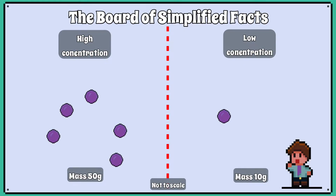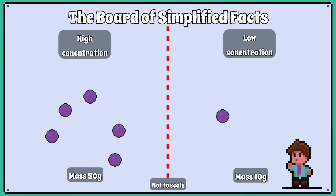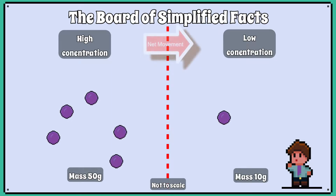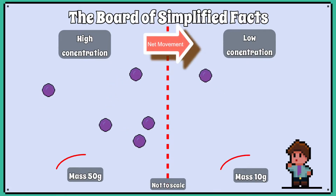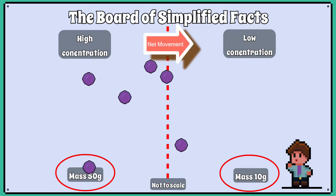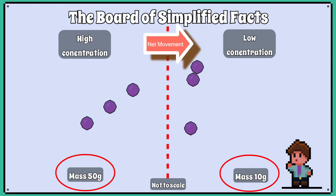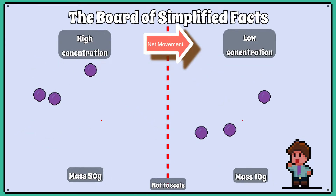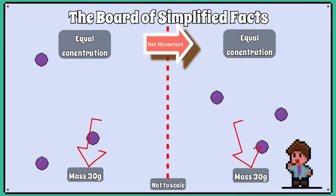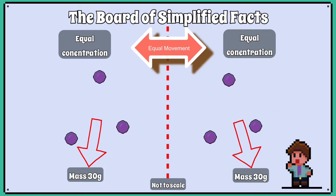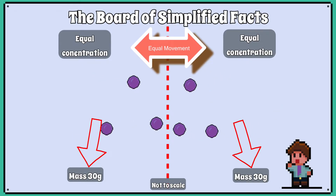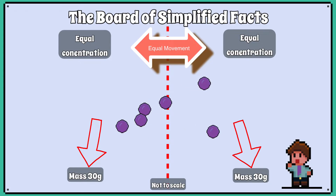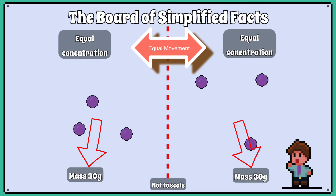You can also imagine some particles that move randomly. If we have two regions where one region has a higher concentration of particles and we can measure the mass of each region, eventually the particles would diffuse and reach equilibrium and they would have the same mass. Equilibrium has now been reached and there is no net movement. Remember, movement is still happening — it is just equal in both directions.